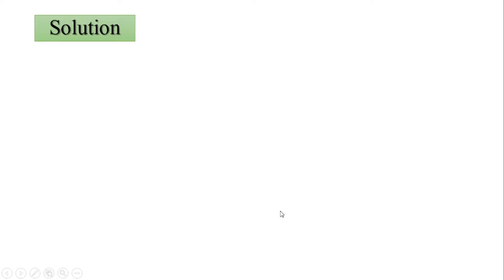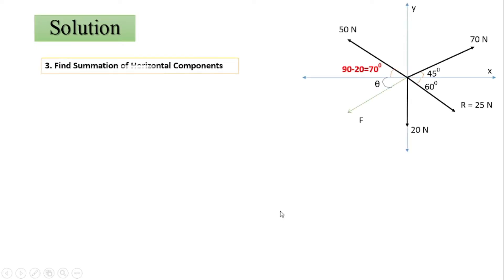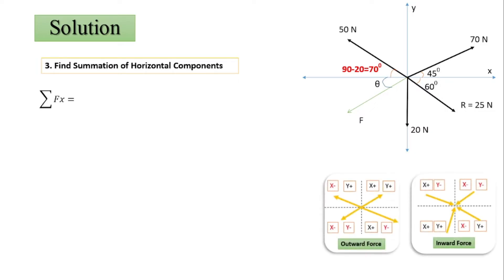The third step is to find summation of horizontal components, summation of Fx. For outward forces: first quadrant x positive y positive; second quadrant x minus y positive; third quadrant x minus y minus; fourth quadrant x plus y minus. If the force is inward, the signs reverse. We use this chart to write the equation for summation of Fx.